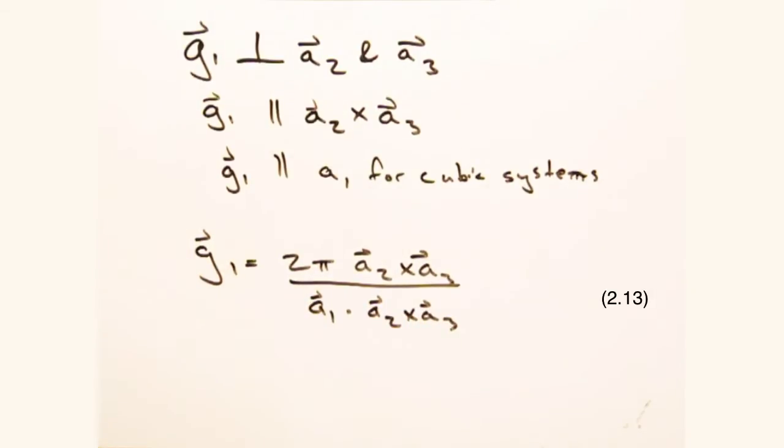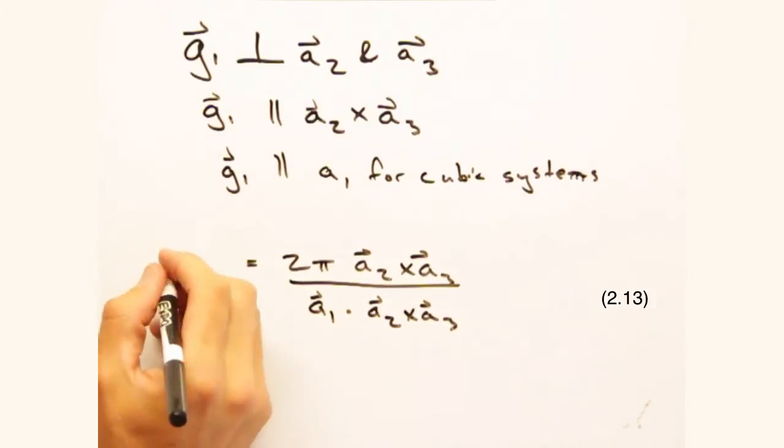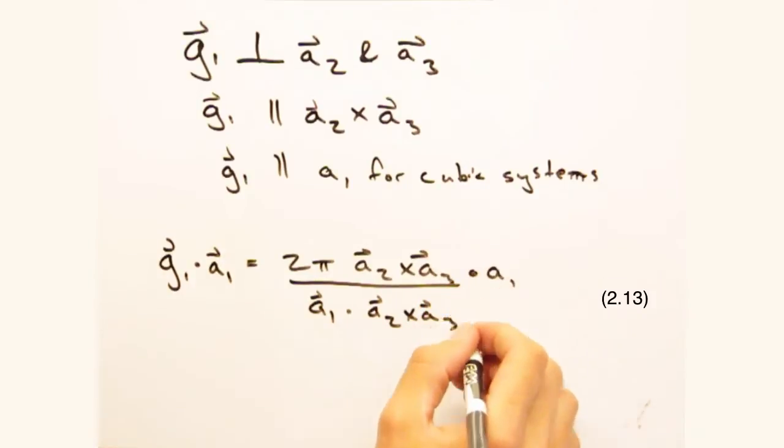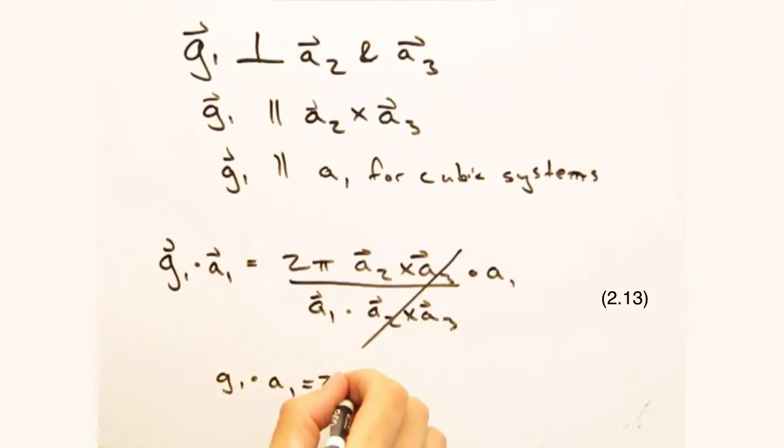g2 and g3 can be obtained similarly, except the subscripts in the cross product are different. And we can see that we've satisfied our original g sub j dot a sub i condition, because if I take g1 and dot it with a1, I get back two pi.